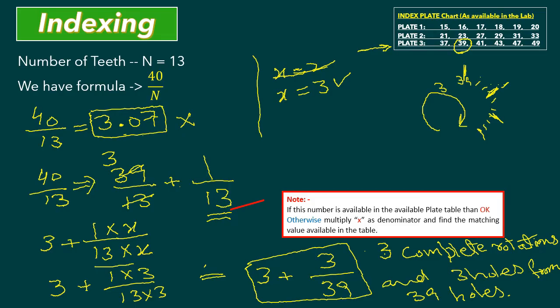To summarize the three indexing methods: in the first method, 40 over N gives a whole number like 4, so no second step is needed. In the second method, you get a decimal, so you use the index plate directly if the denominator matches a plate number. In the third method, you multiply numerator and denominator by x until the denominator matches an available plate number. These are the three ways to do indexing. If you have any questions or comments, you can send me an email. Thank you very much.